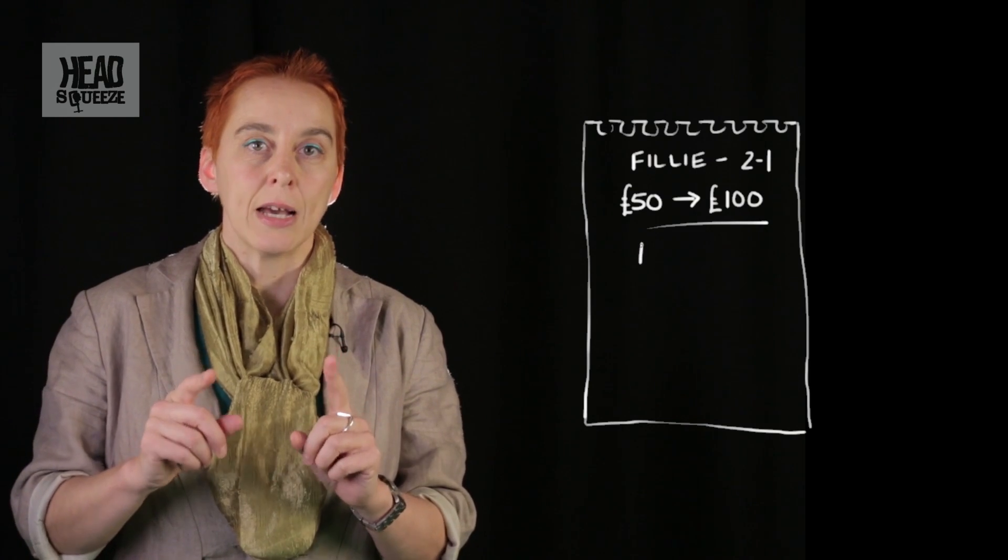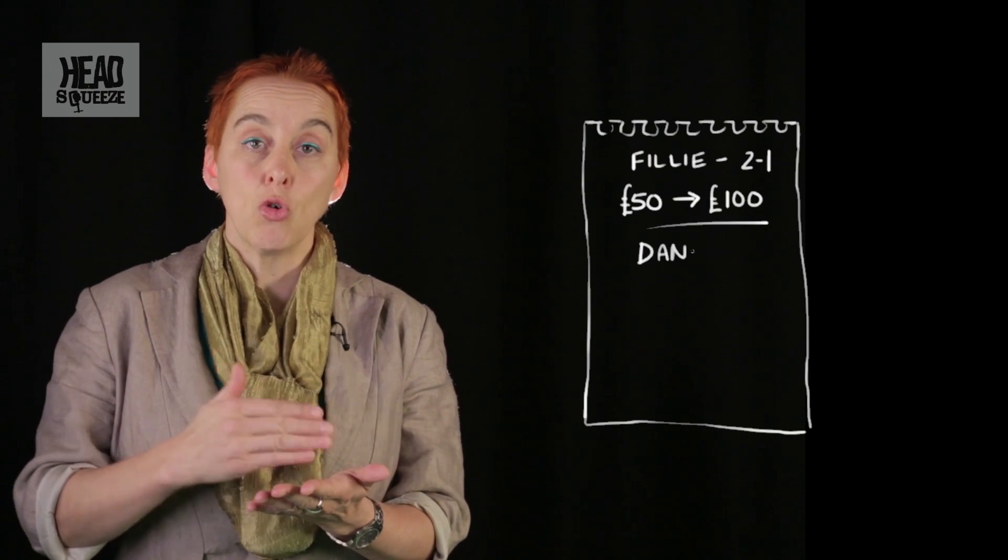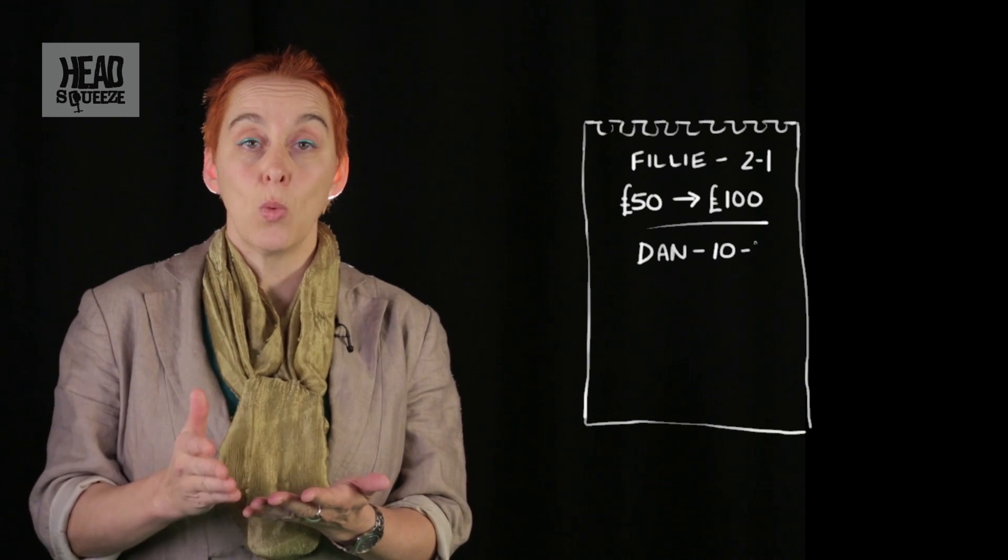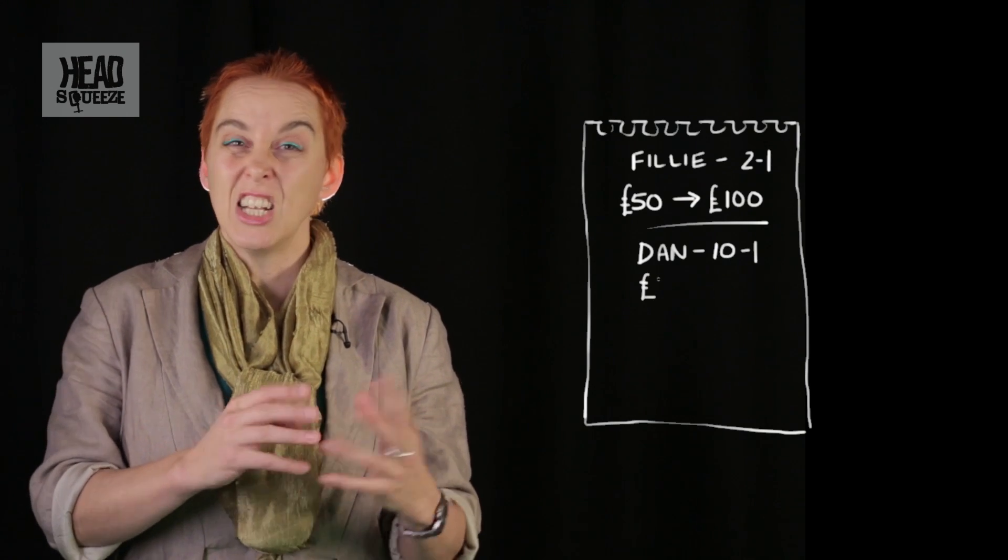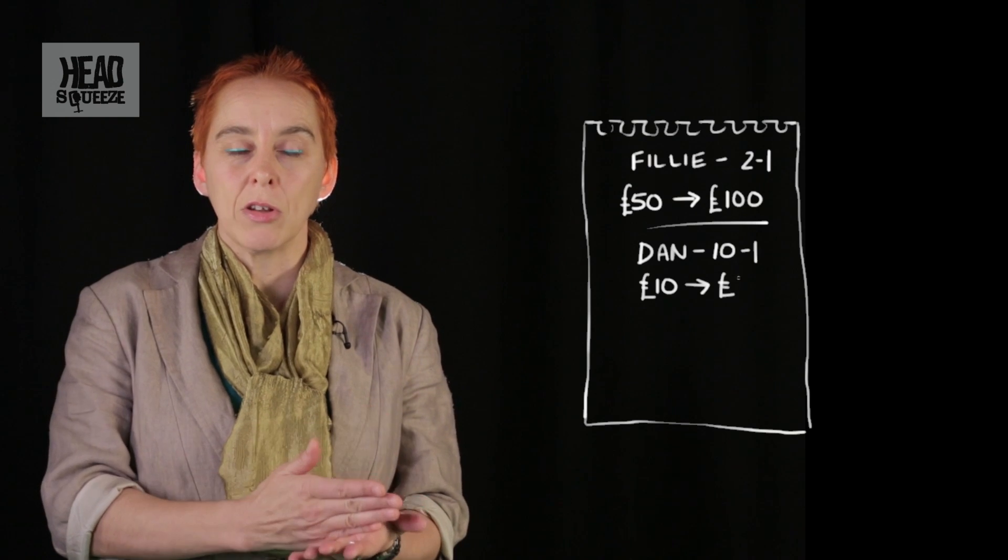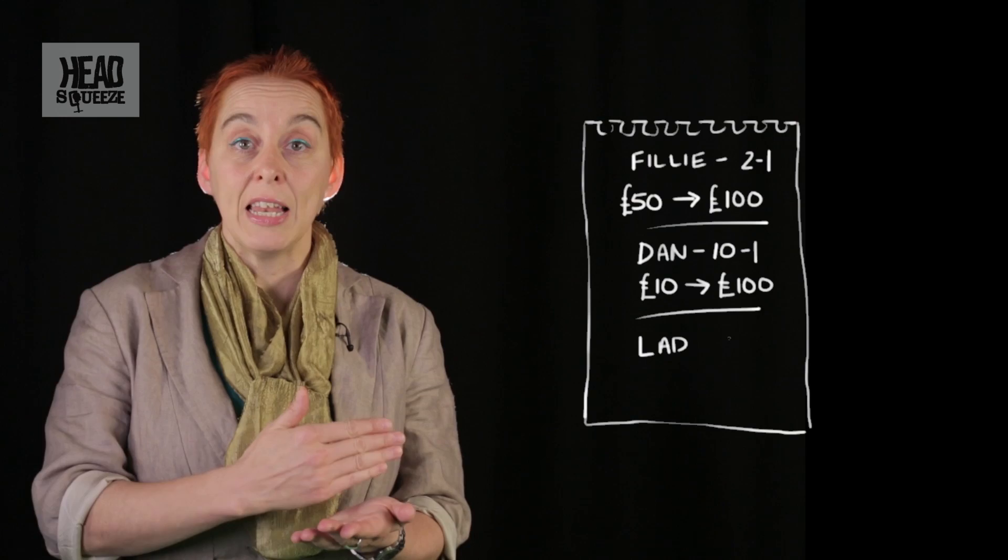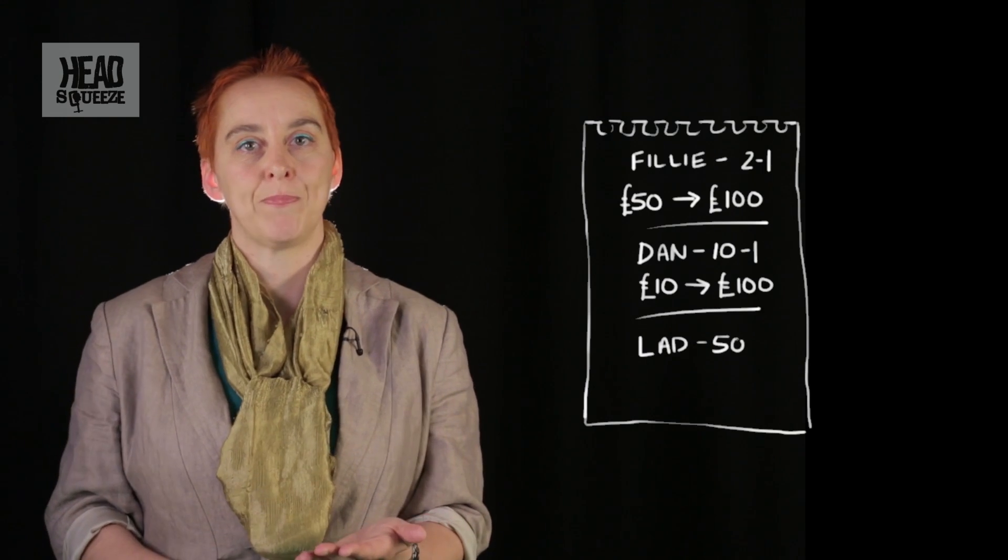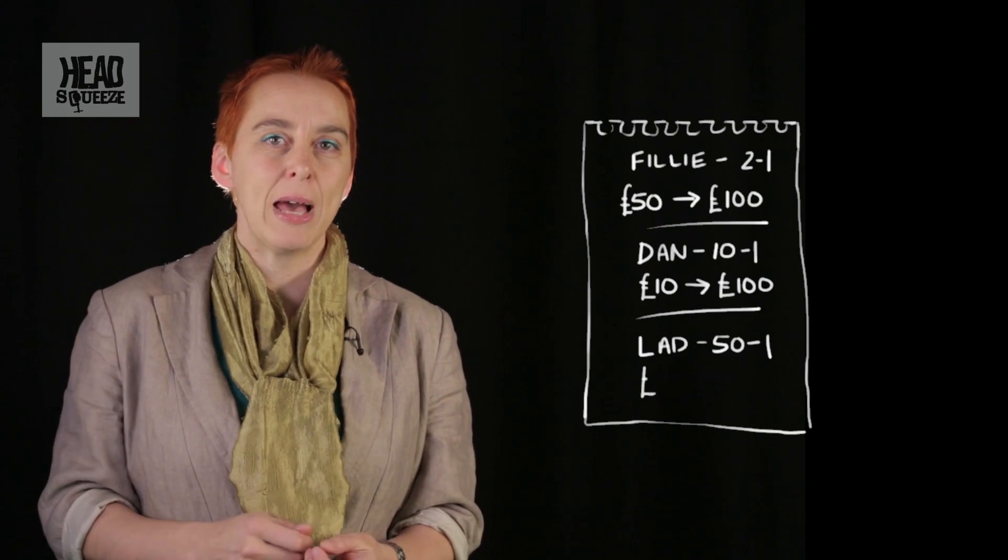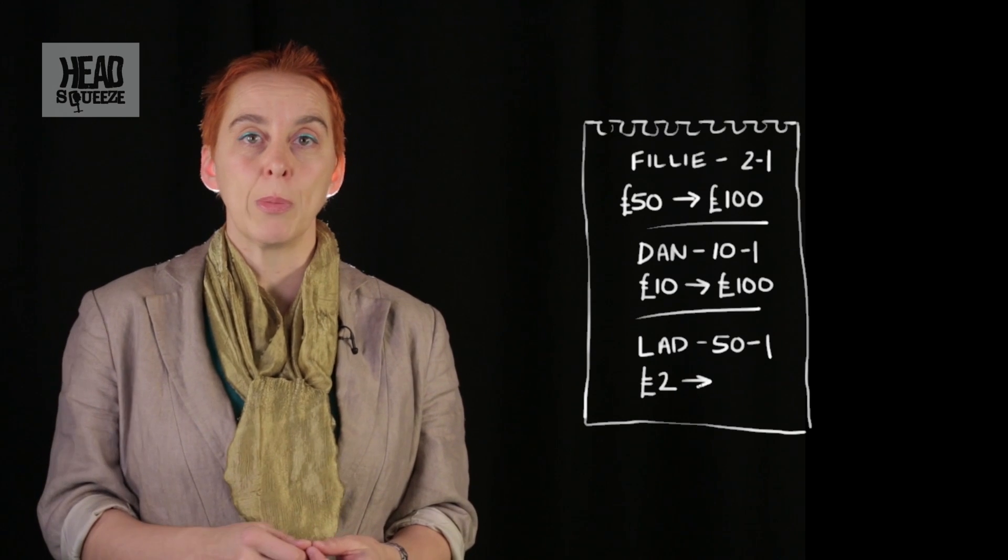So I had a brilliant idea. I'm going to weight my bets according to how likely I think they are to win. On Favourite Filly, she's the most likely to win, so instead of just putting 10 pounds on her I'm going to put 50 pounds on her and then if she wins I'll win 100 pounds. Decimal Dan I'll stick with my 10 pound bet so if he wins I get 100 pounds.